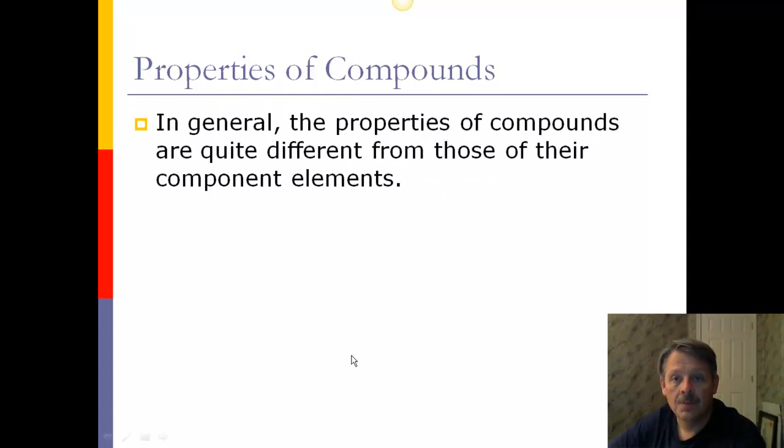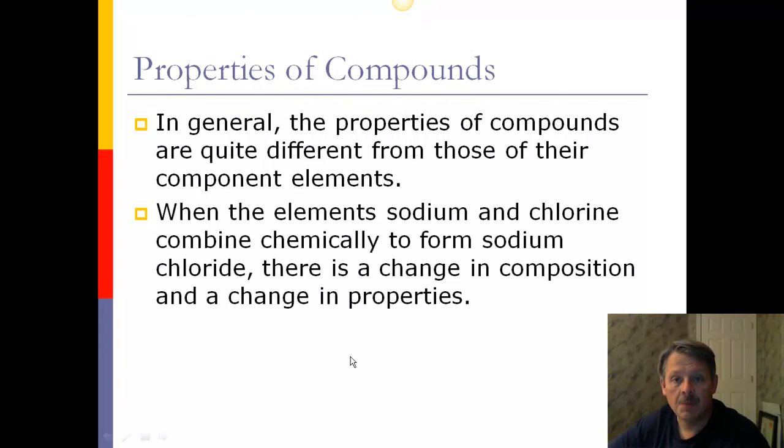In general, the properties of compounds are quite different from those of their component elements. A perfect example would be sodium chloride, which is table salt. When you combine sodium and chlorine in a one-to-one ratio, you get table salt. And we put it on our food, it enhances the flavor, and it tastes good.